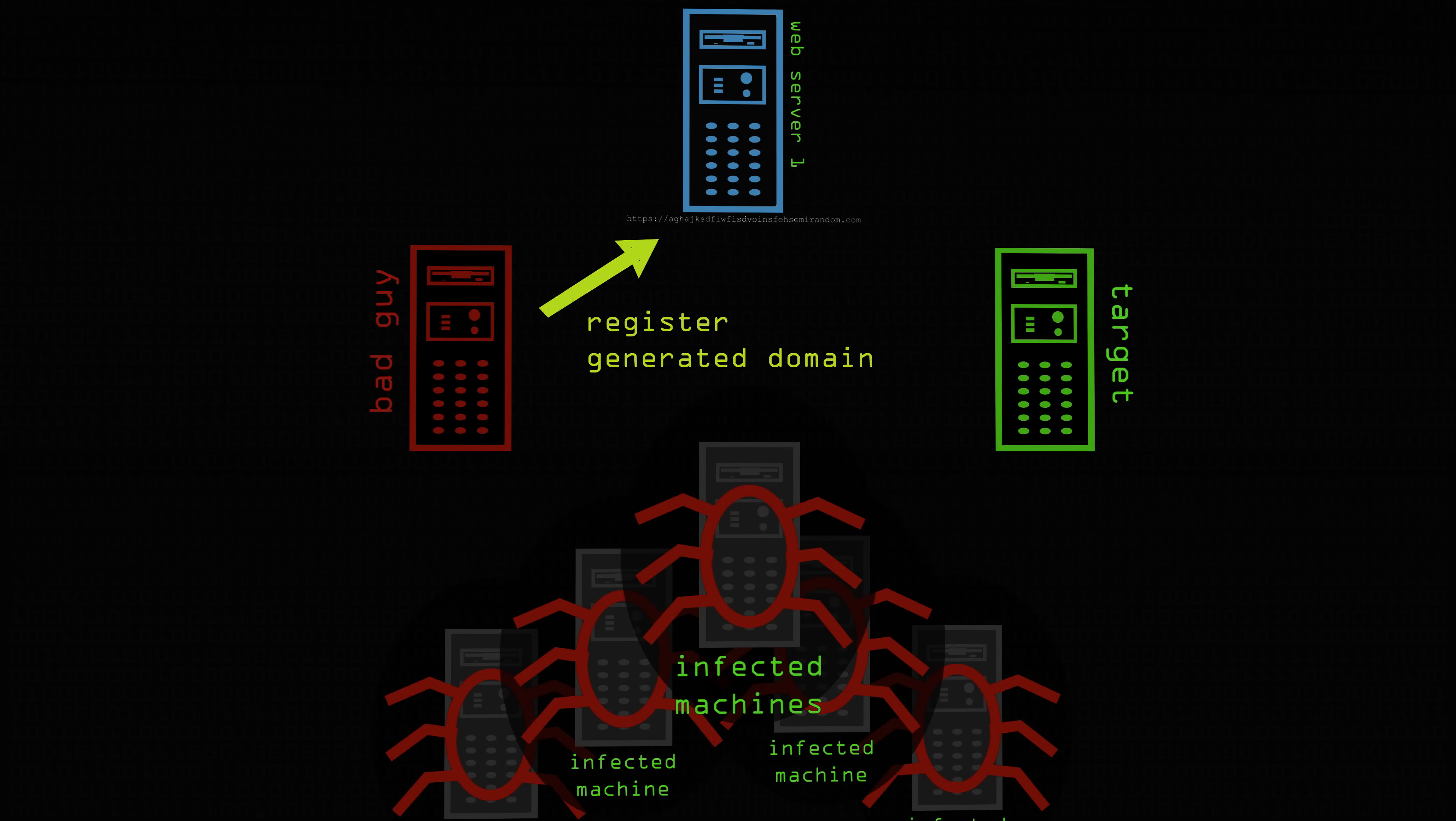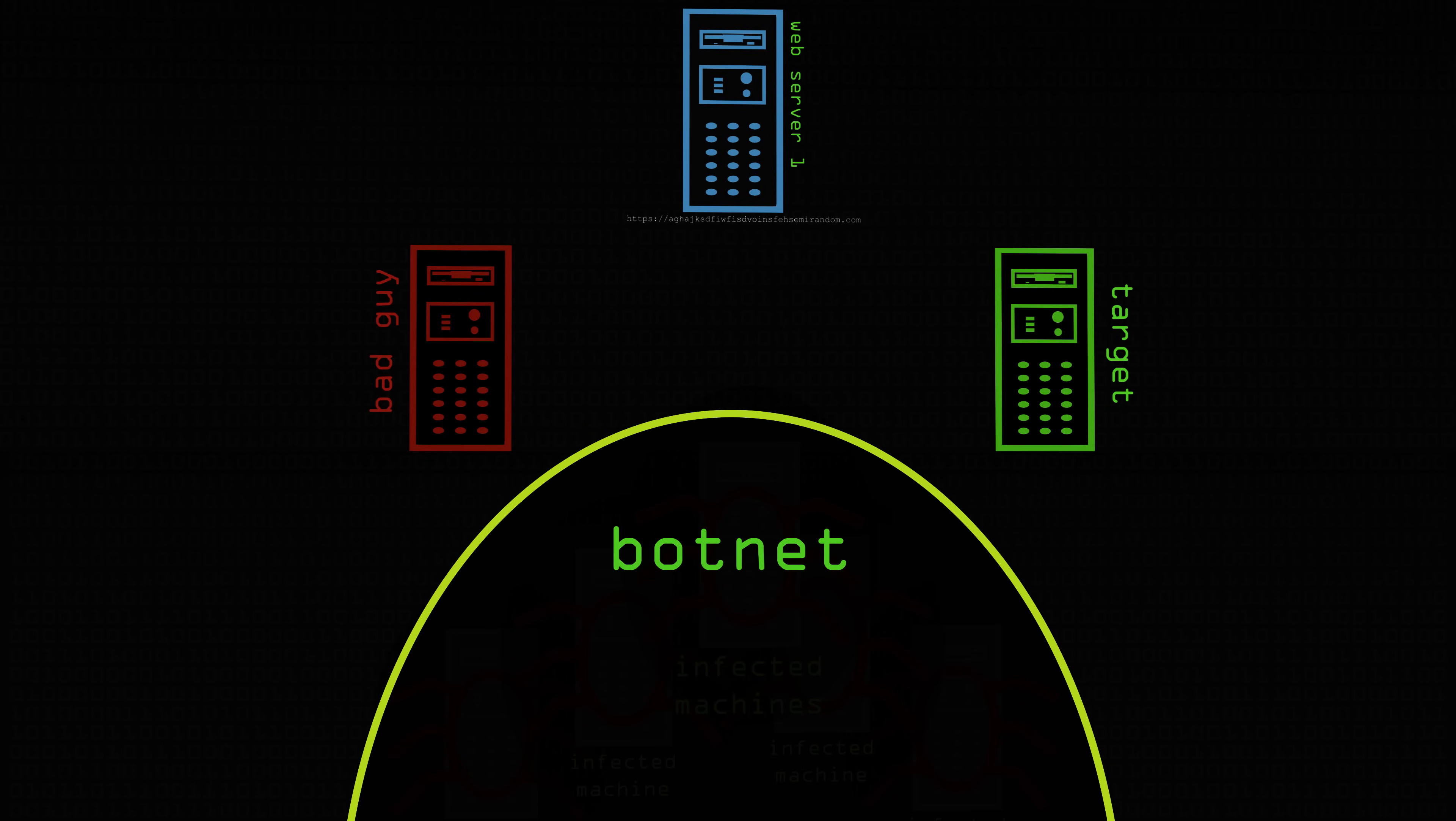How did that differ? Because surely then, once it's gone to that command and control server, if you can see what it's communicating with, presumably you can stop it. Or is there a way of making it move on to another command and control server?